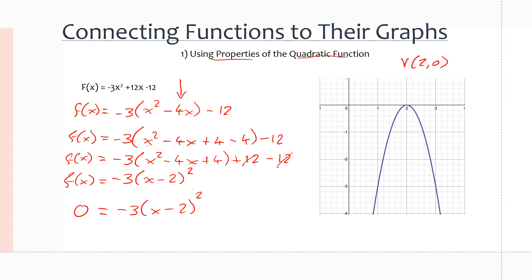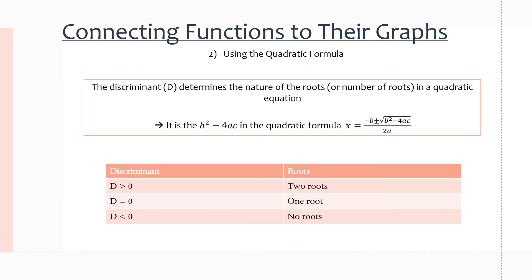Since the whole right side is multiplied together, if we find the x value that makes x minus 2 equal to zero, that makes f(x) equal to zero. Setting x minus 2 equal to zero and adding 2 to each side gives x equals 2 as our only zero. The graph touches the x-axis only at x equals 2, confirming one zero. The function opens downwards, indicated by the negative a value, and these are ways we match the equation to its graph.